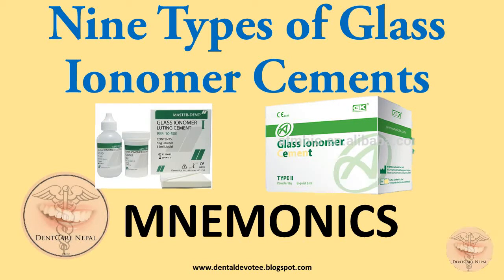Hello my dear friends, continuing with our mnemonics series, today I am presenting a mnemonic to memorize 9 different types of glass ionomer cement based on their use. There are 9 different types of GIC based on their application, and we should know which particular type of GIC we are using for what purpose.